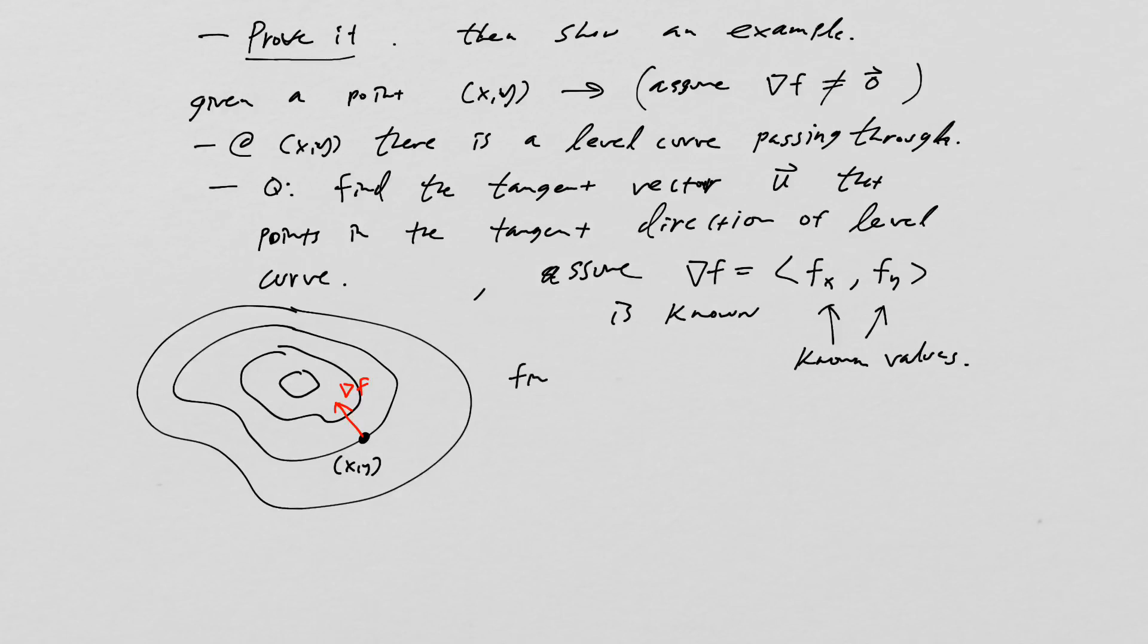So what we want to do is now we want to find the level curve tangent u. To find this point, we have to know a fact. It must be that u points in the direction in which d_u f, the directional derivative, is equal to zero. So that's the directional derivative and we want to set it equal to zero.